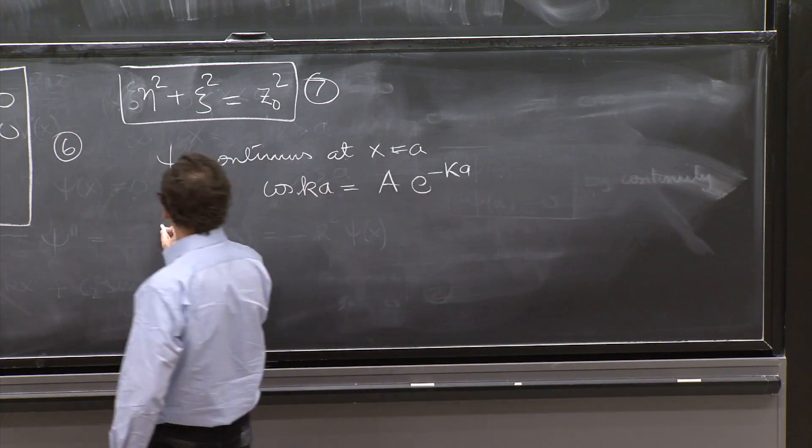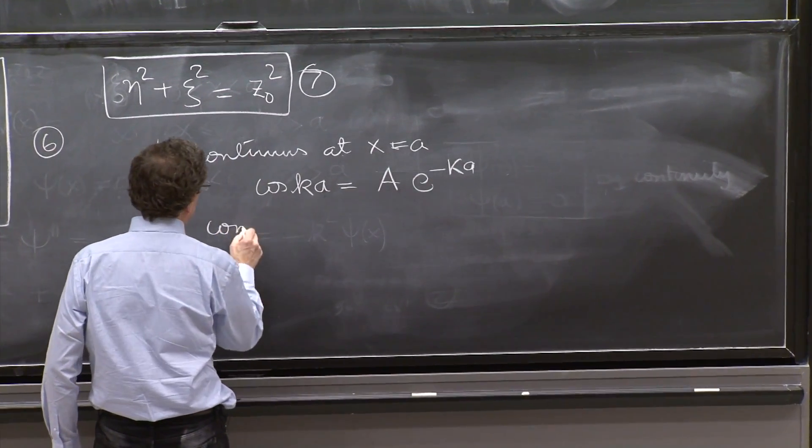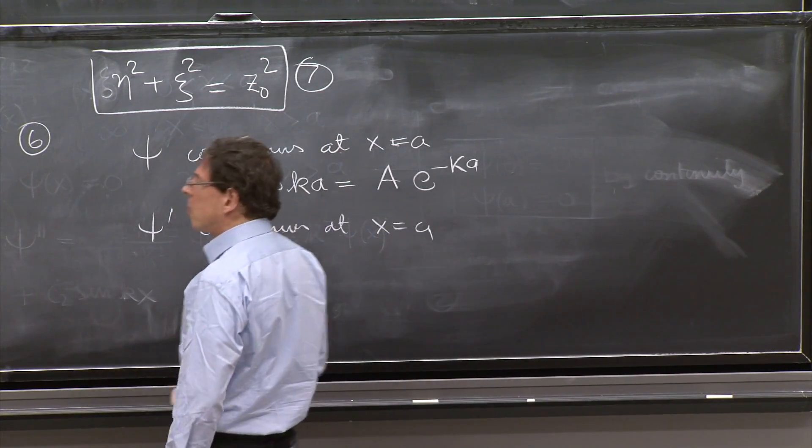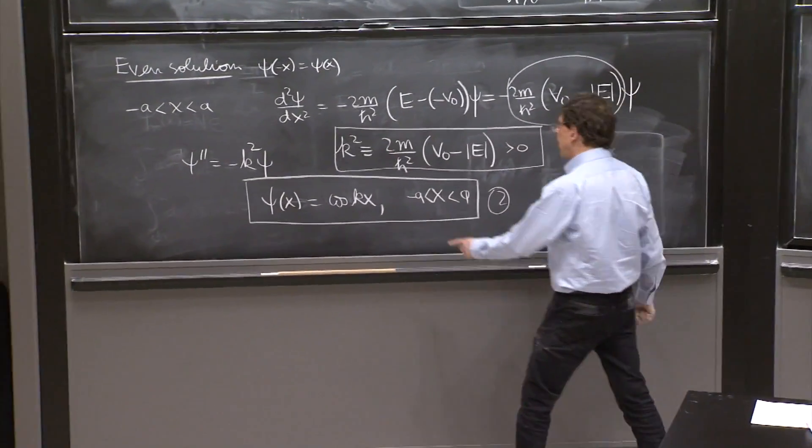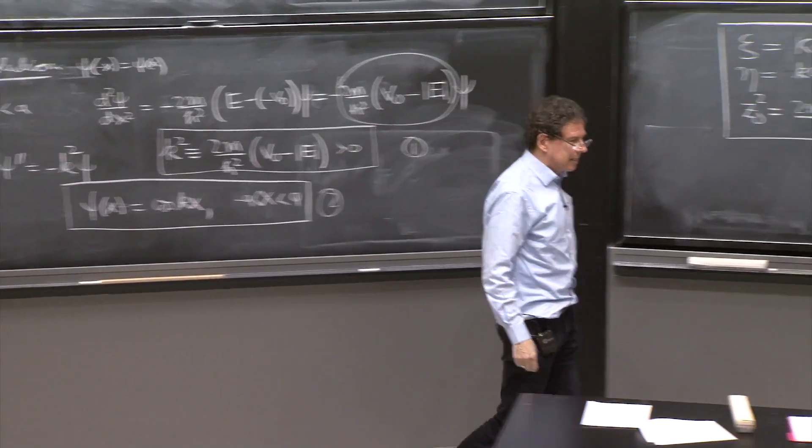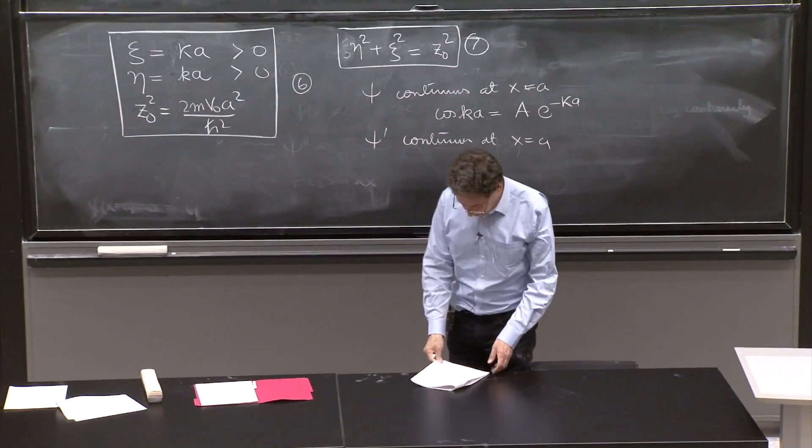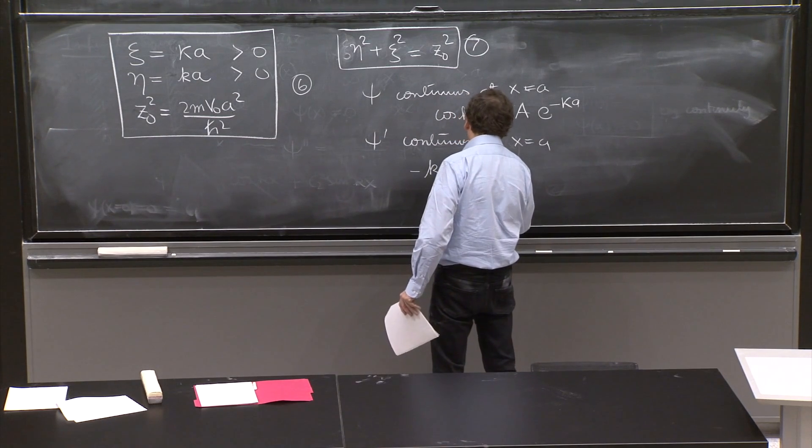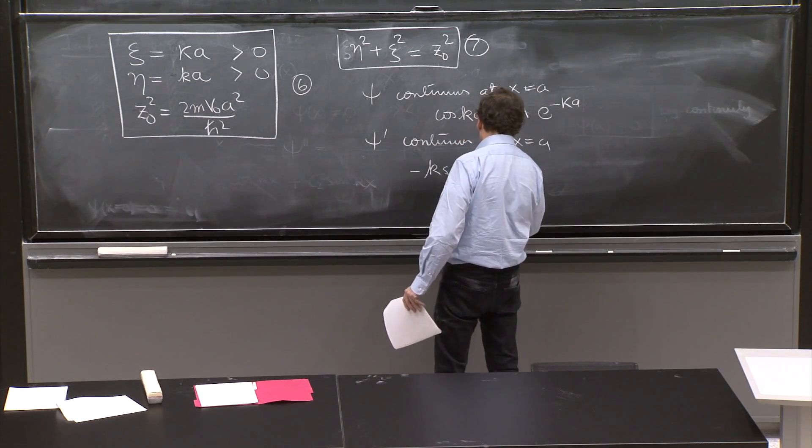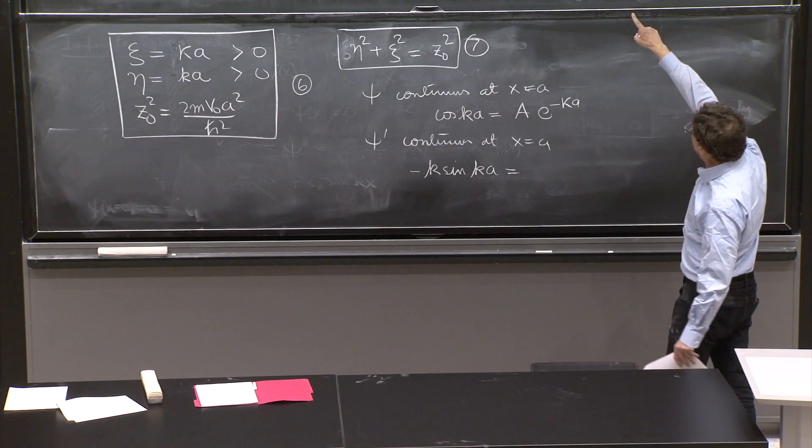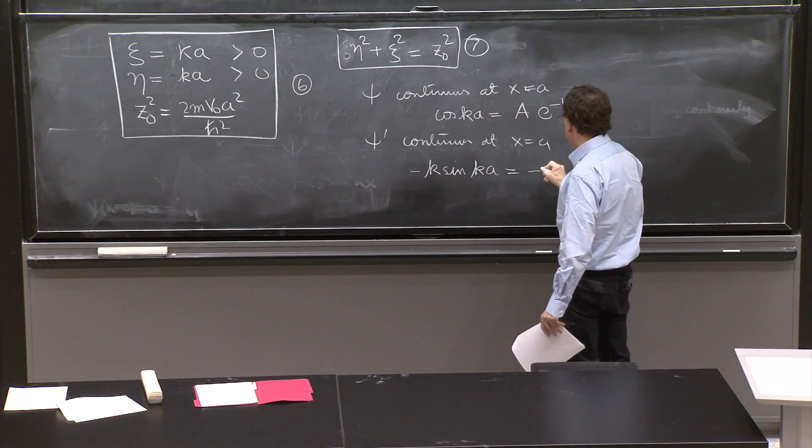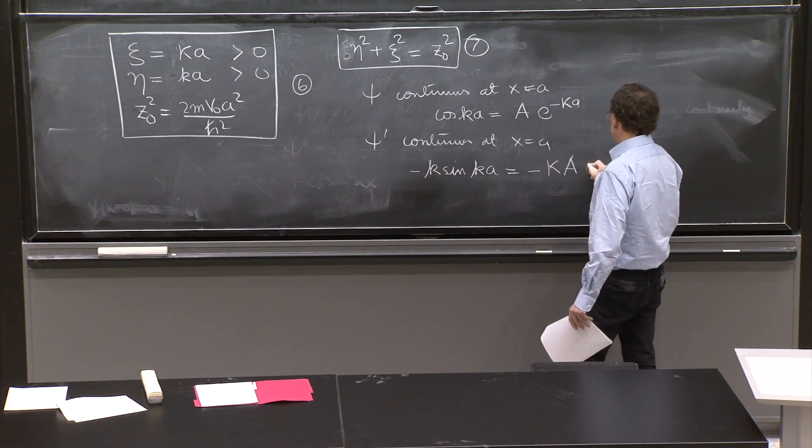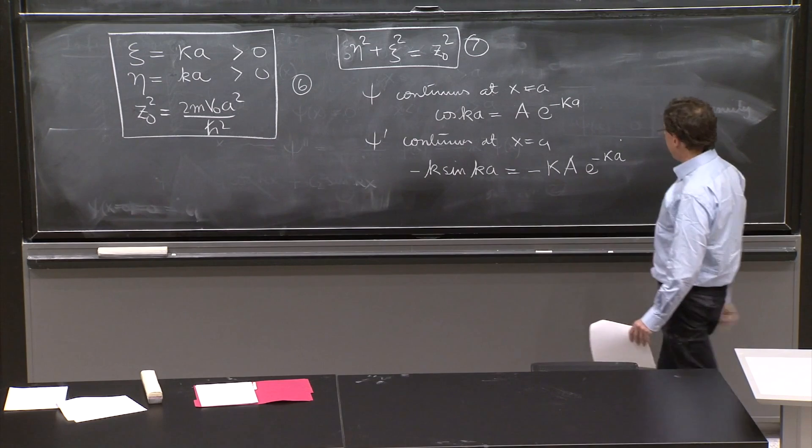Psi prime must be continuous at x equals a as well. What is the derivative of this function? It's minus k sine of kx, that becomes ka, is equal to the derivative of that one, which is minus kappa a, e to the minus kappa little a.